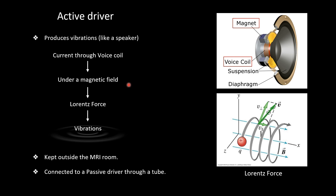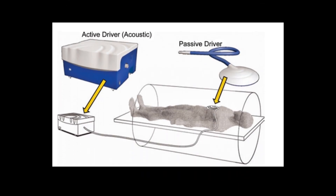Since there is magnetic field production in this setup, the active driver has to be kept outside the MRI room. The active driver which produces the vibrations is kept outside the MRI room. Via a tube, these vibrations are carried to something called a passive driver, which is attached to the body of the patient. The passive driver has no active magnetic field, so it can be kept in the MRI room.